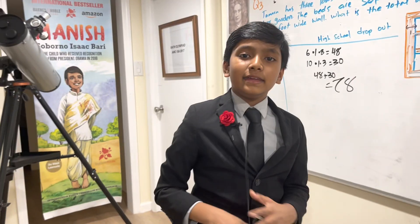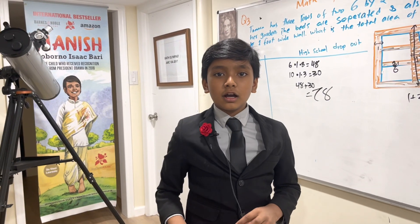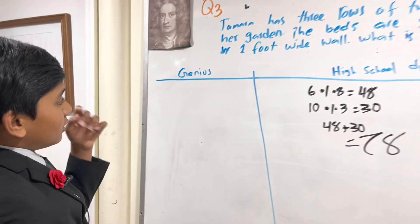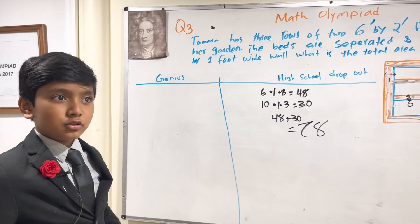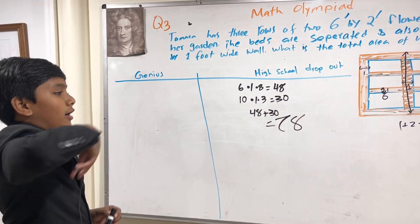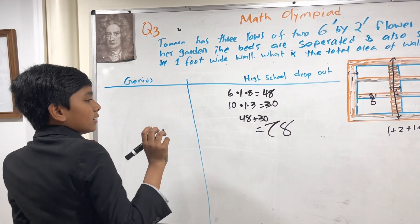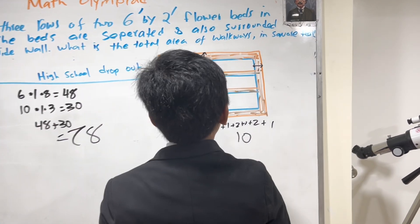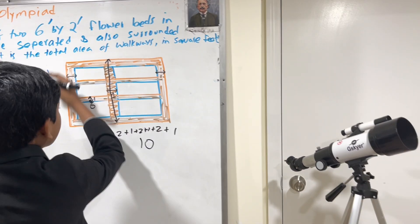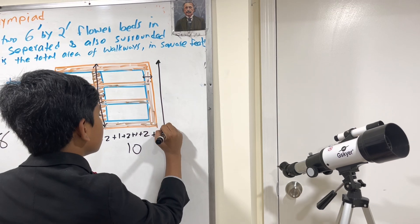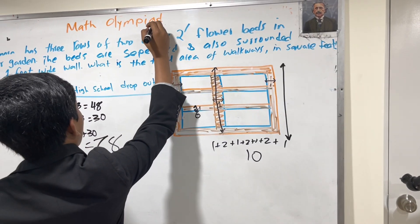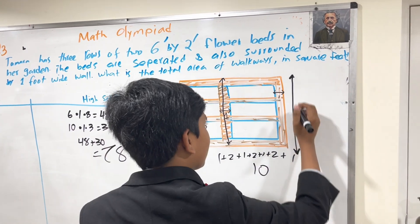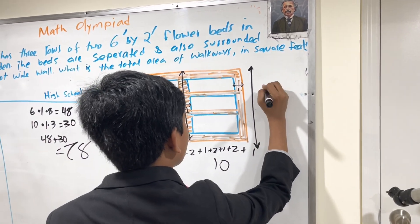Now time to do it the non-high school dropout way. Well, that is to take the dimension of the entire garden first. I believe this was actually feet, not inches — stupid imperial system. Anyway, as we know from earlier, this dimension is ten.